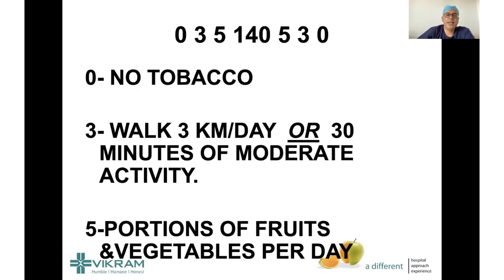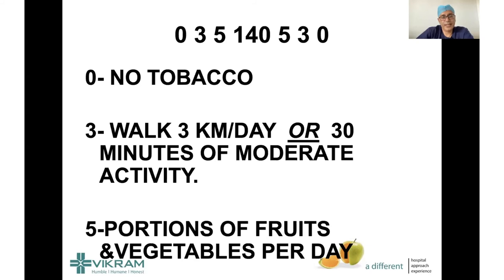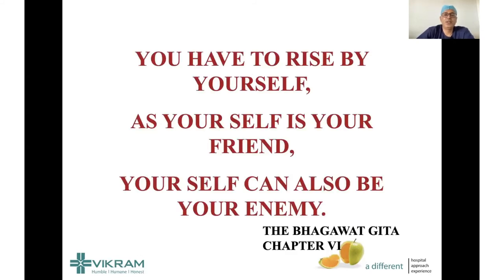To summarize very quickly, here is a simple mnemonic: 0-3-5-1-4-0-5-3-0. Zero means no tobacco. Three means walk three kilometers average per day, or 30 minutes of moderate activity. Five is five portions of fruits and vegetables per day — you can mix and match. 140 is your upper limit of systolic blood pressure. These tips help reduce the chances of heart trouble and maintain not only a healthy heart, but also healthy kidneys, liver, and brain.